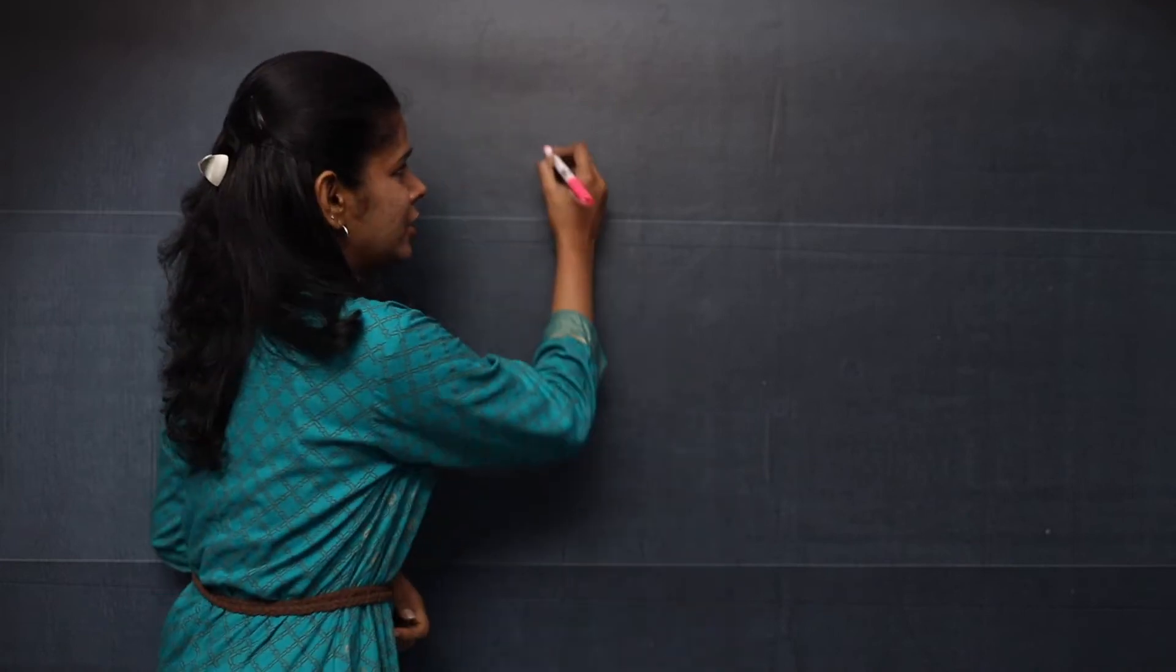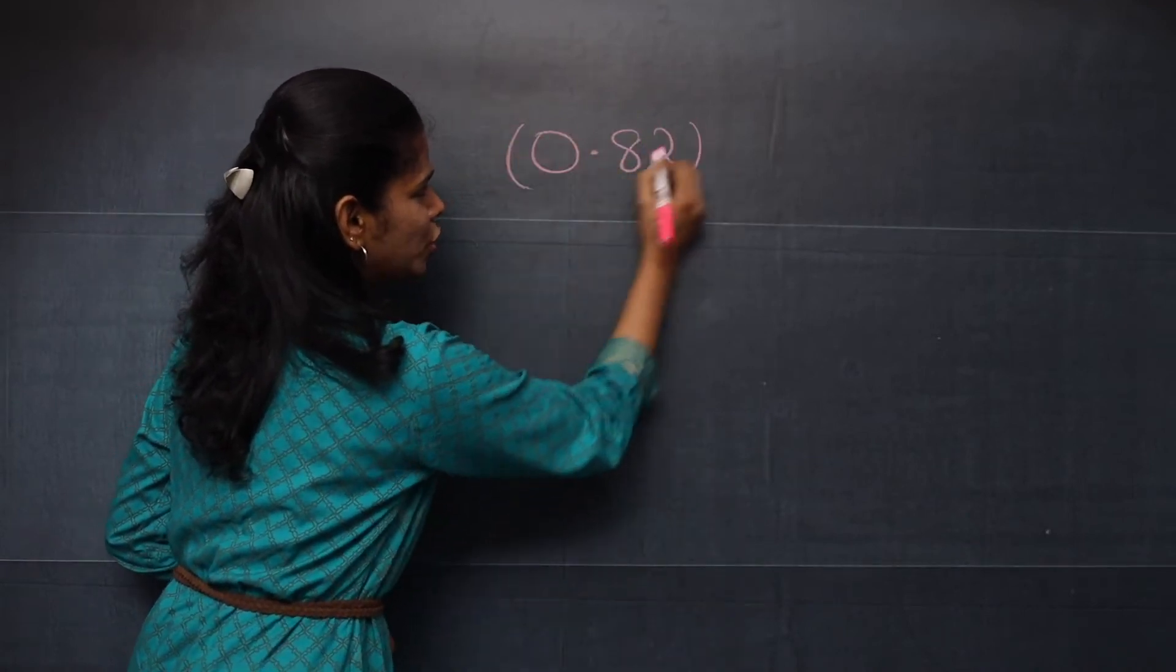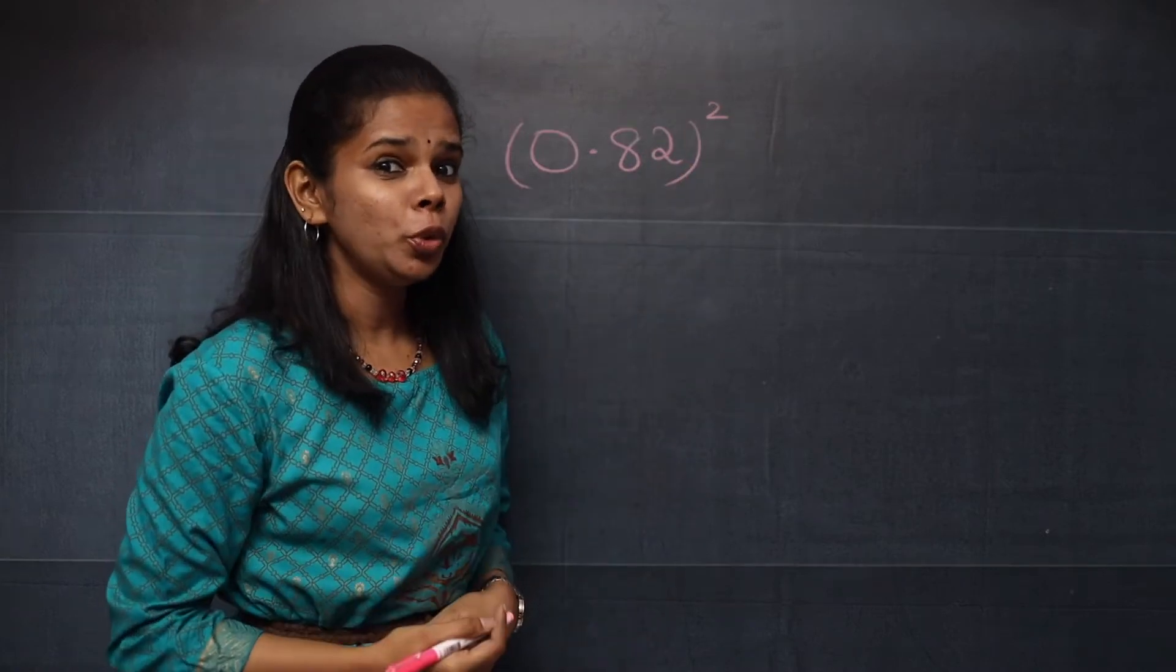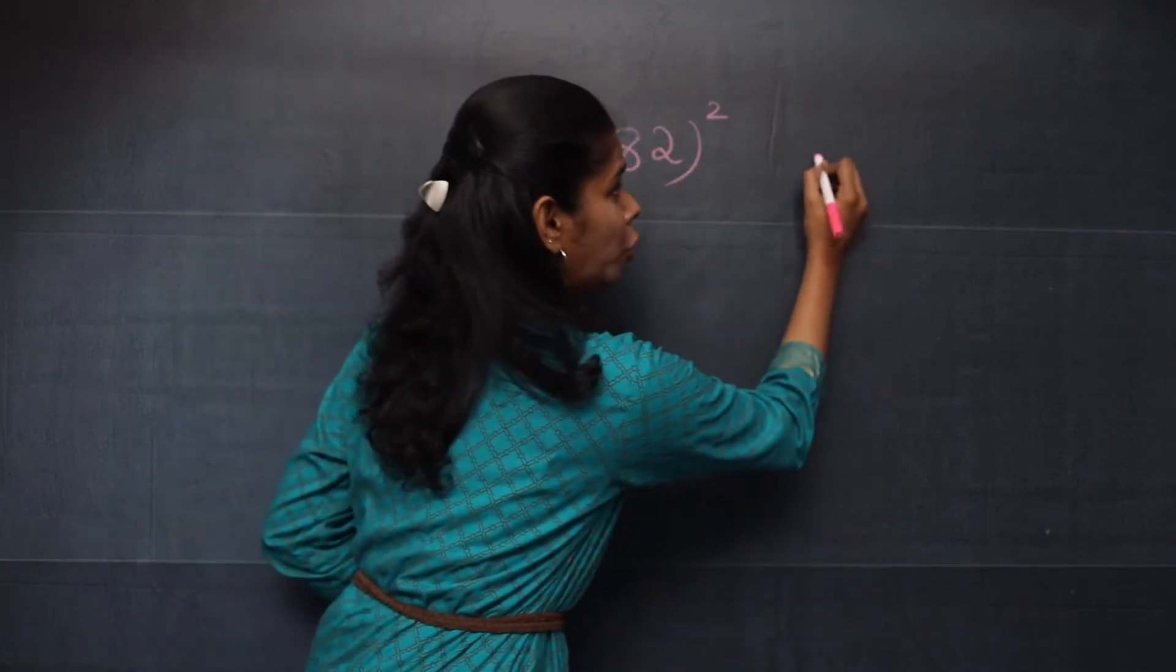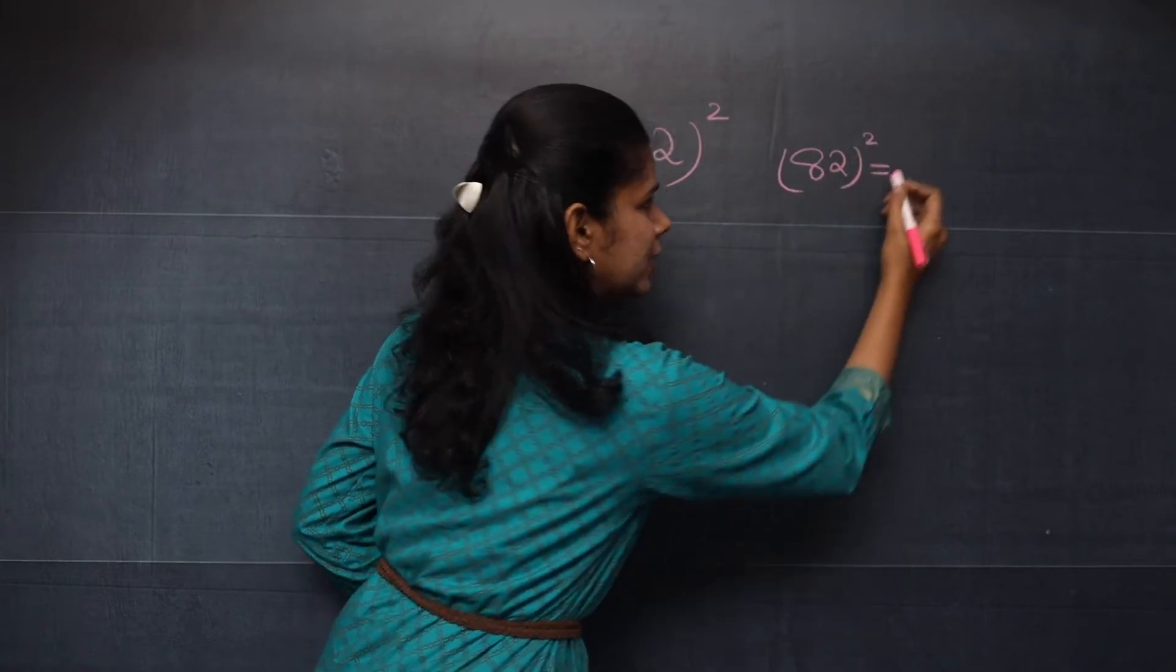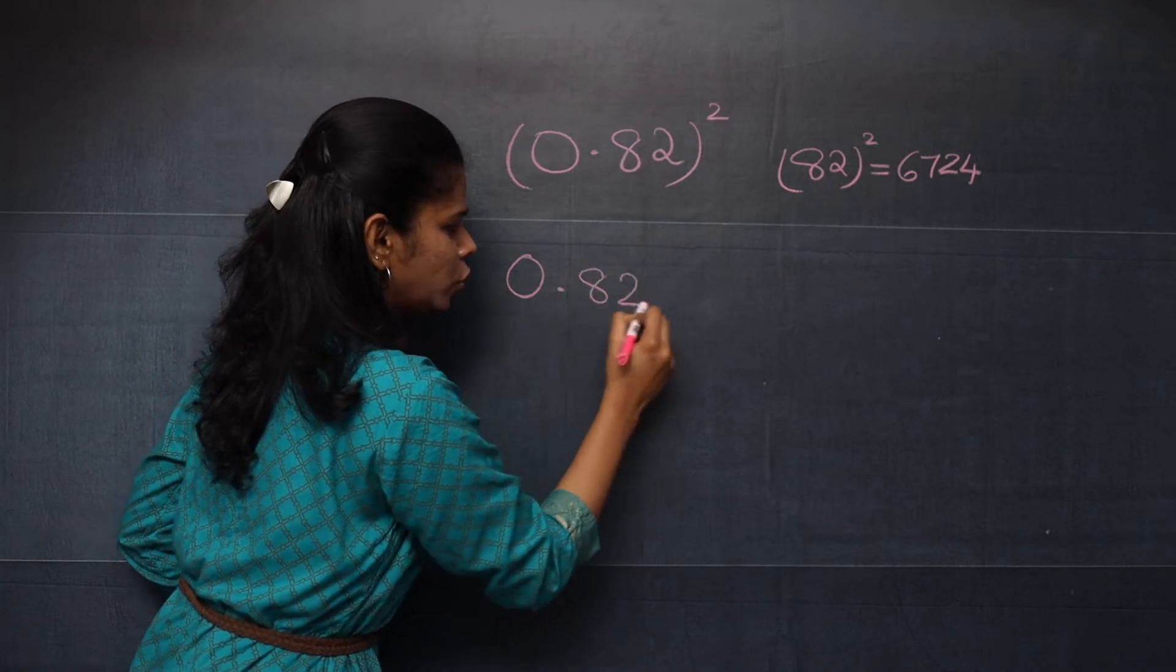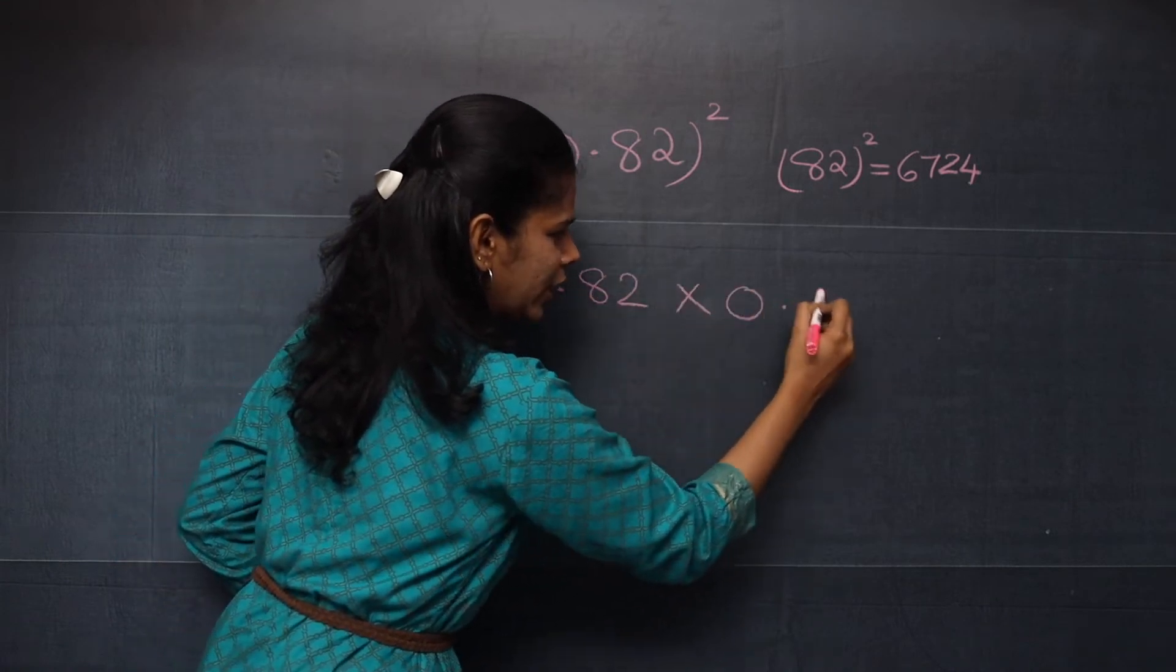Now, let's find 0.82 whole square. By the 2 digits square trick, you know 82 square is equal to 6724. So 0.82 into 0.82.